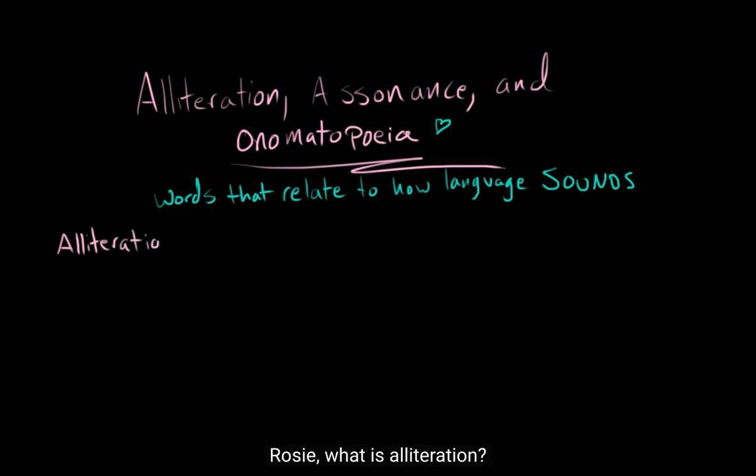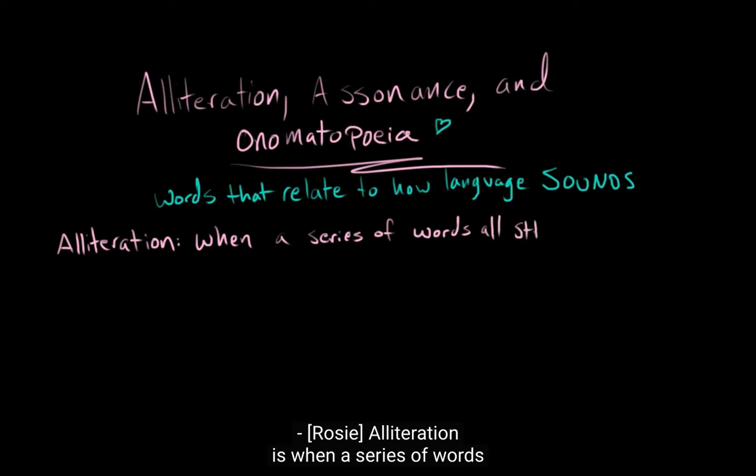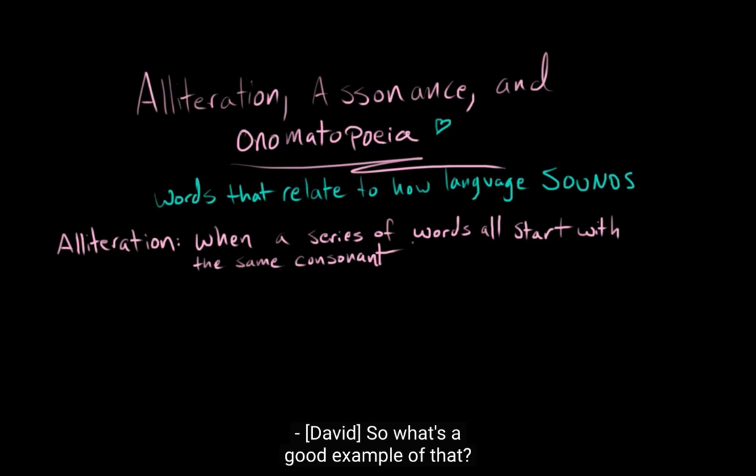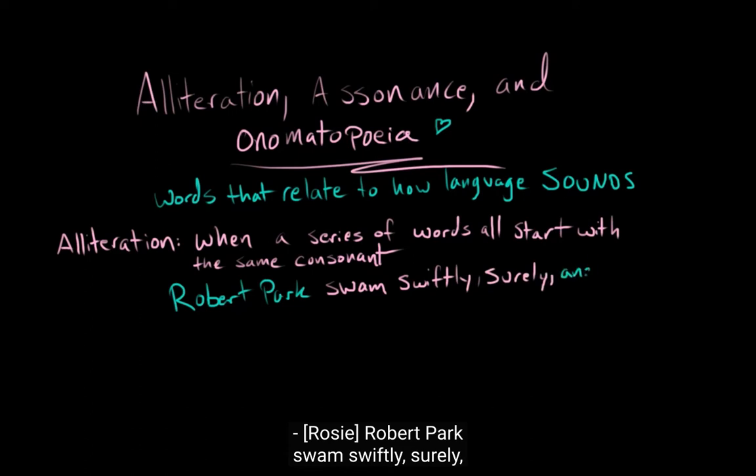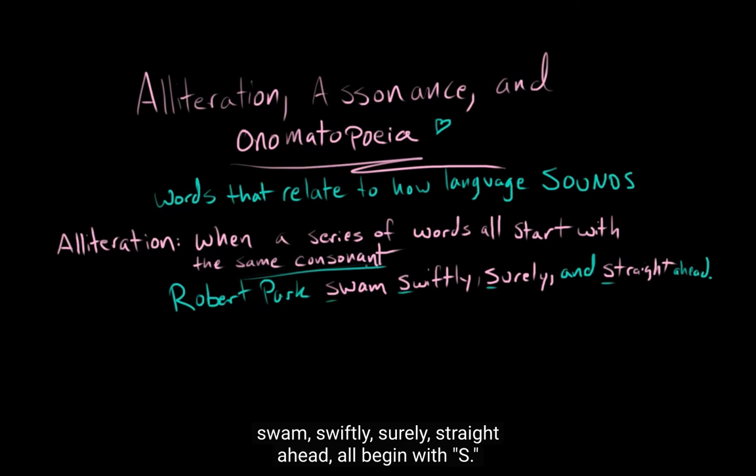But let's begin with alliteration. Rosie, what is alliteration? Alliteration is when a series of words all start with the same consonant. So what's a good example of that? Robert Park swam swiftly, surely, and straight ahead. So you can see that all these pink words here, swam, swiftly, surely, straight ahead, all begin with S. Right. And so this is why we call this alliteration because S is a consonant, and all of these things share a similar consonant sound.